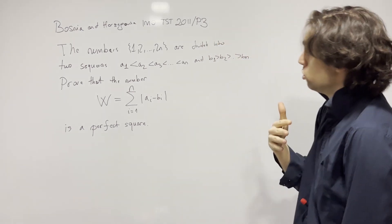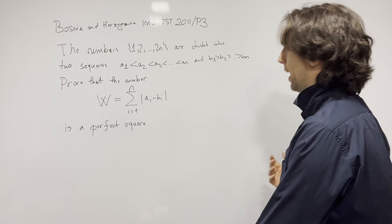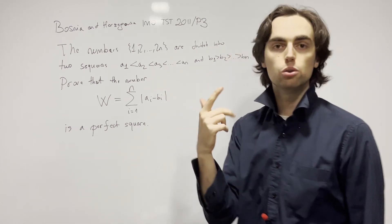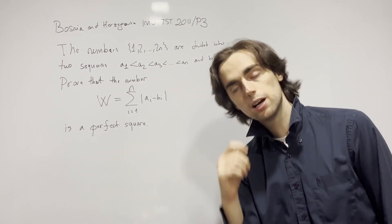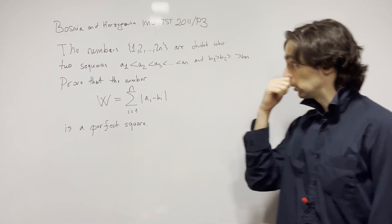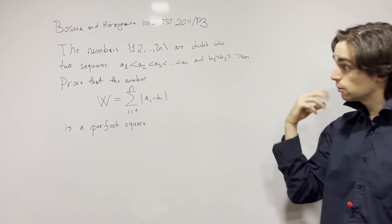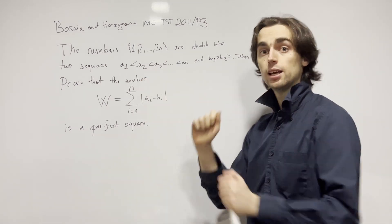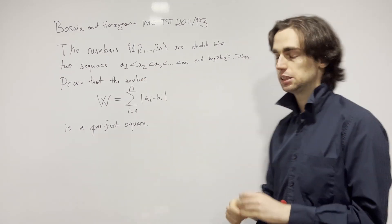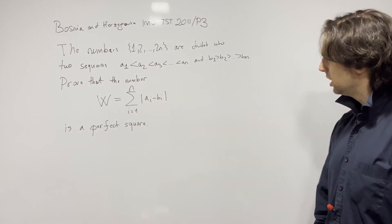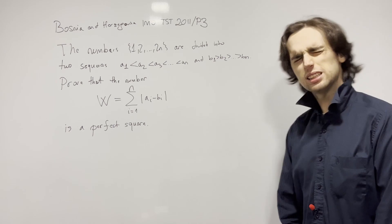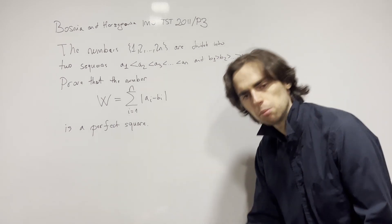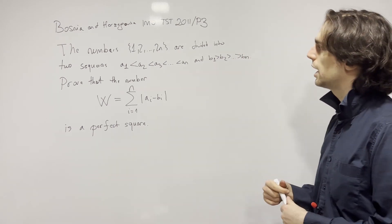There are two things we can do. If we have no idea what to do, we can look at cases for n equals 1, 2, 3, 4, 5 and so forth until we get some idea, and look at the different ways we can combine these numbers. Since this is problem number three, let's choose n equals 2.